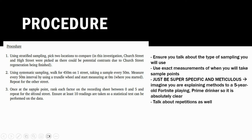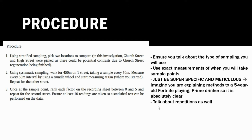In the final bullet point, rank each factor and be super specific and meticulous. Imagine you're explaining something to a five-year-old. You've got to make sure it's absolutely clear because the examiner is going to come in knowing nothing about you. Talk as if you're talking to someone who knows nothing. Also make sure to talk about repetitions.